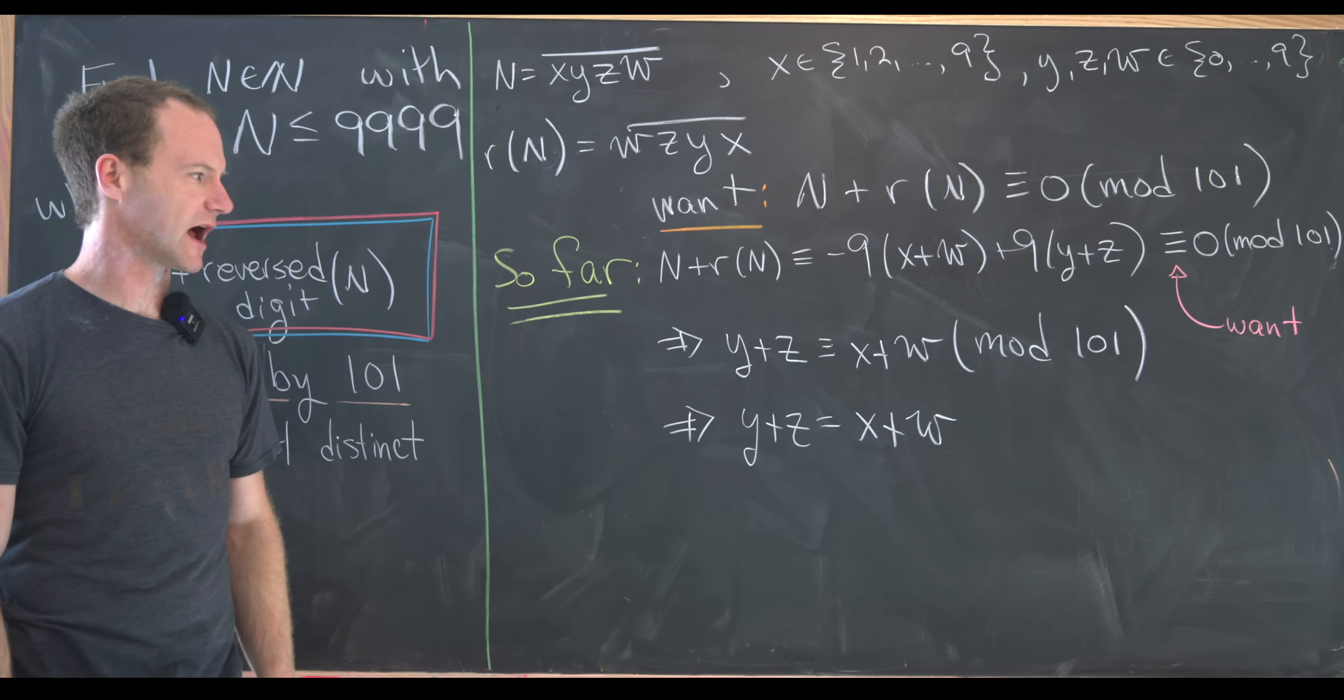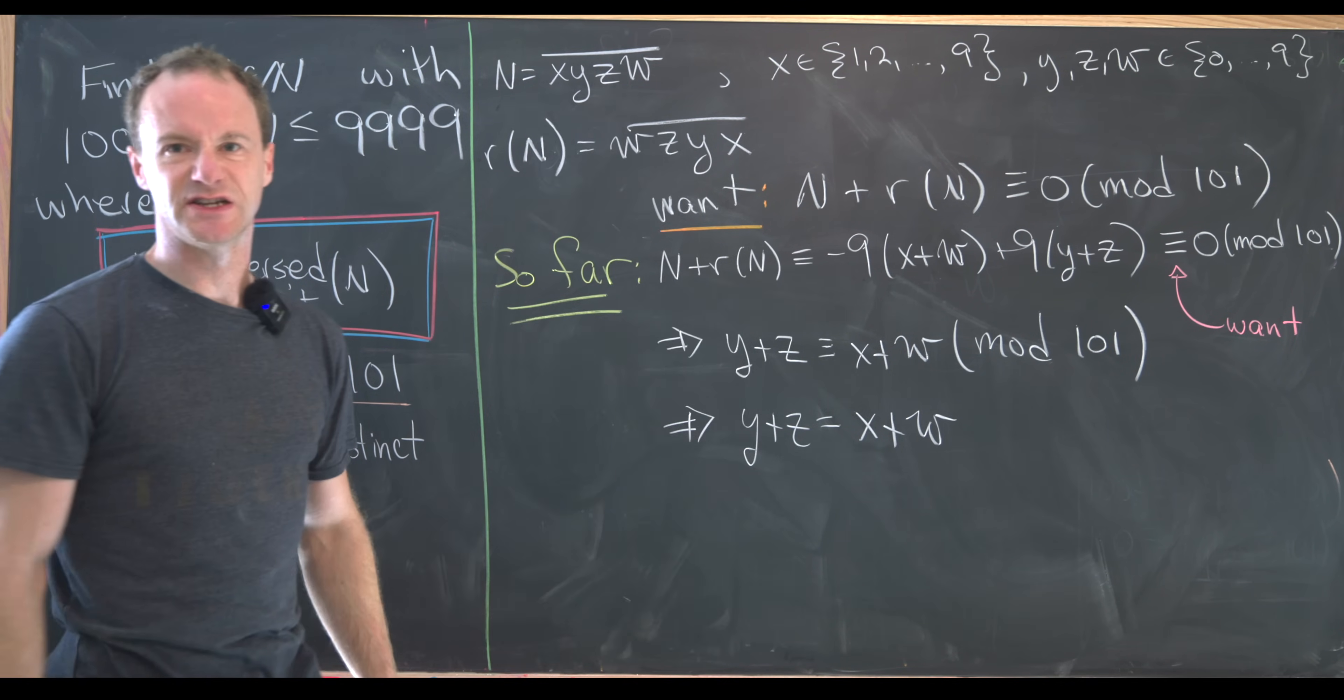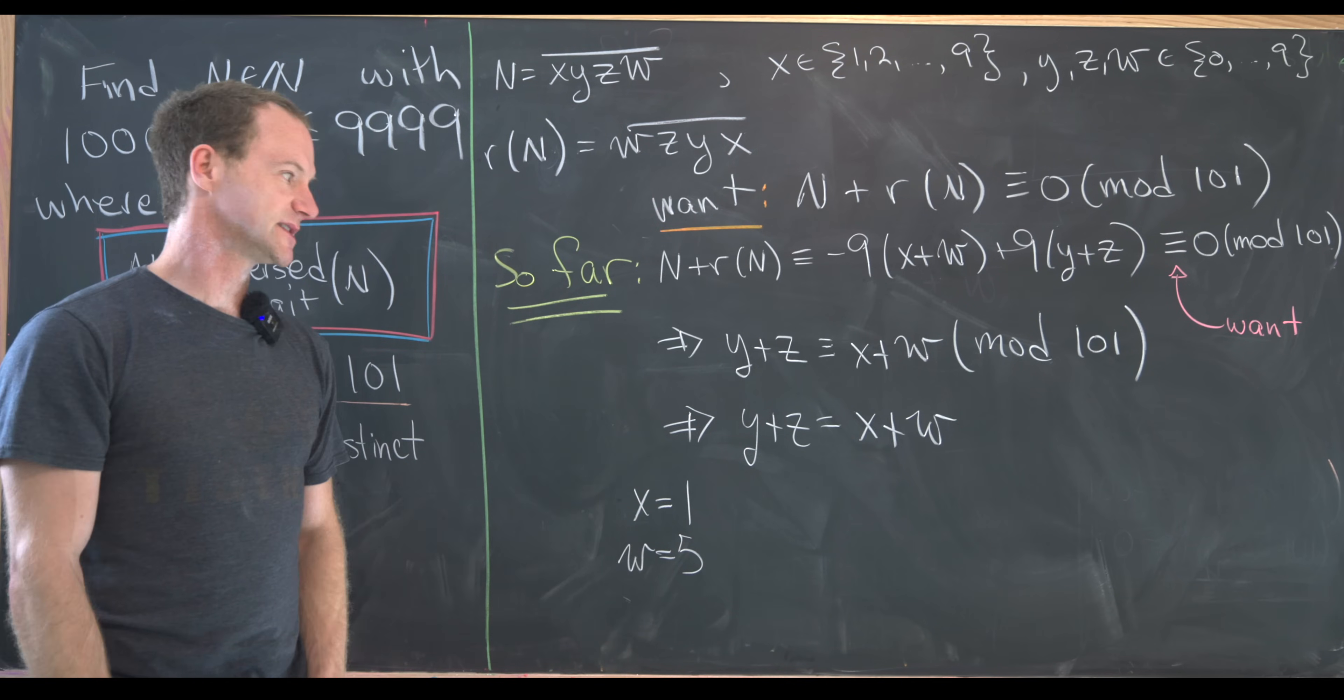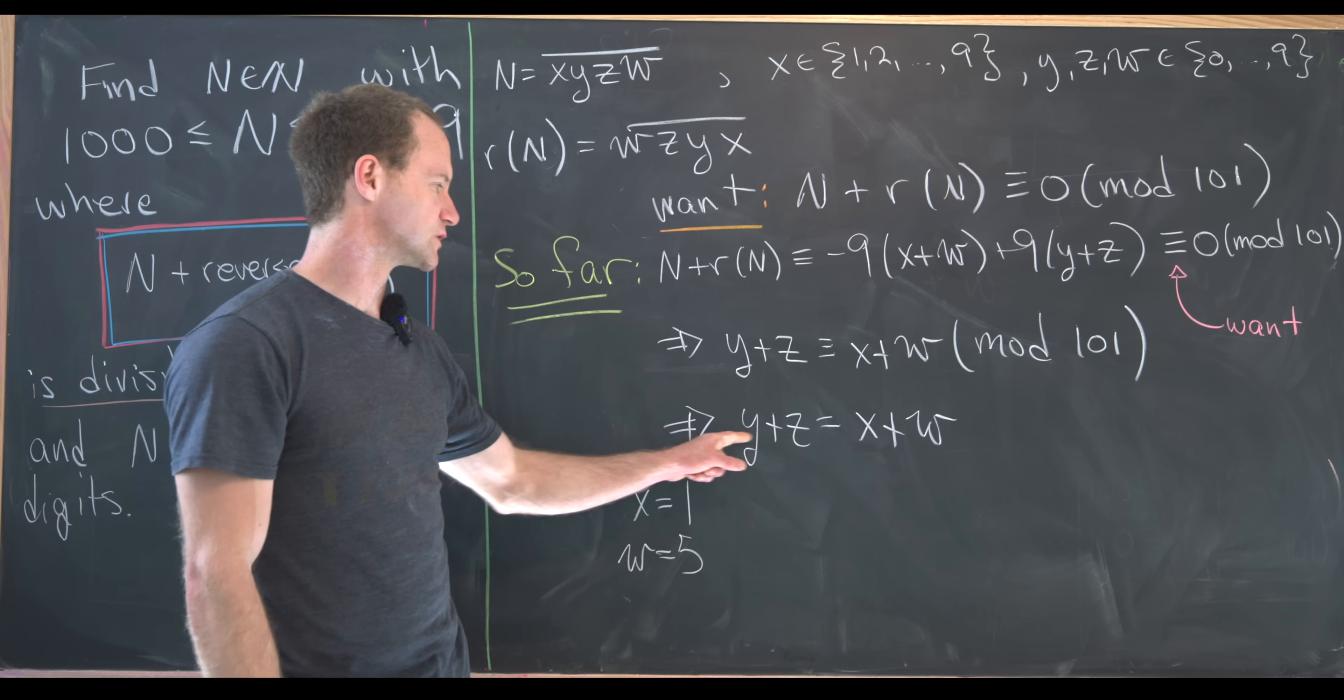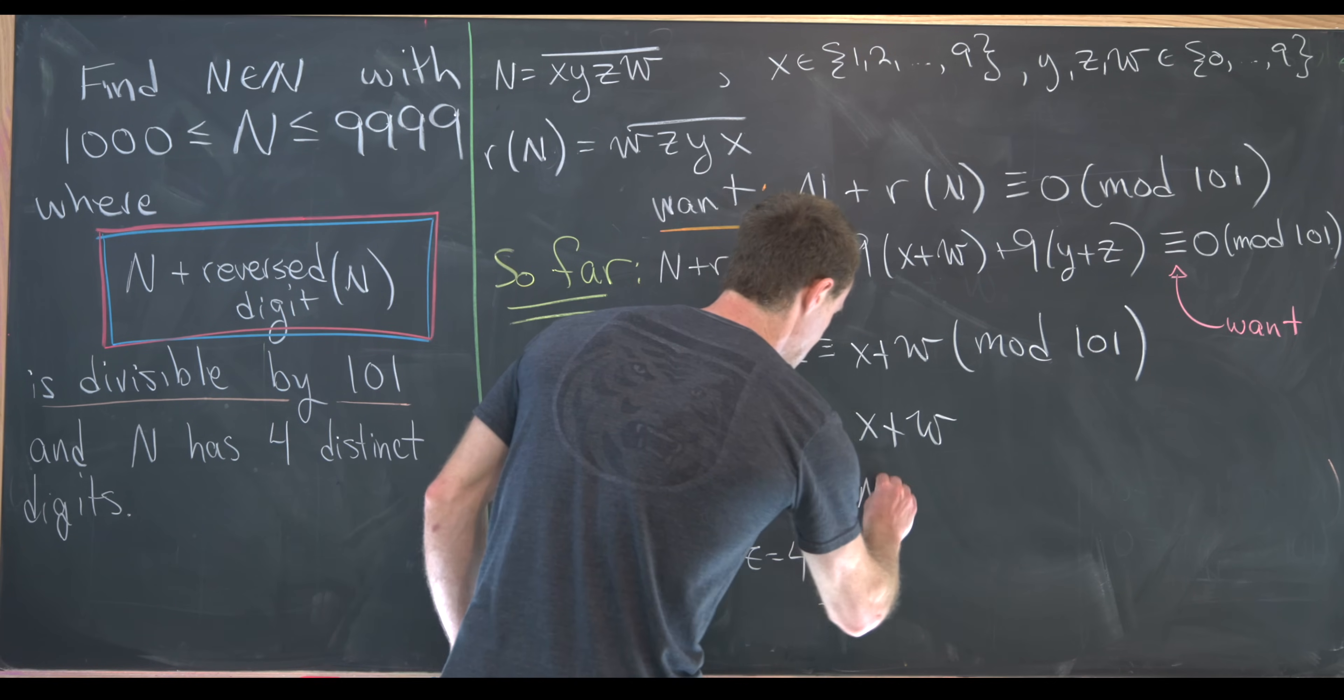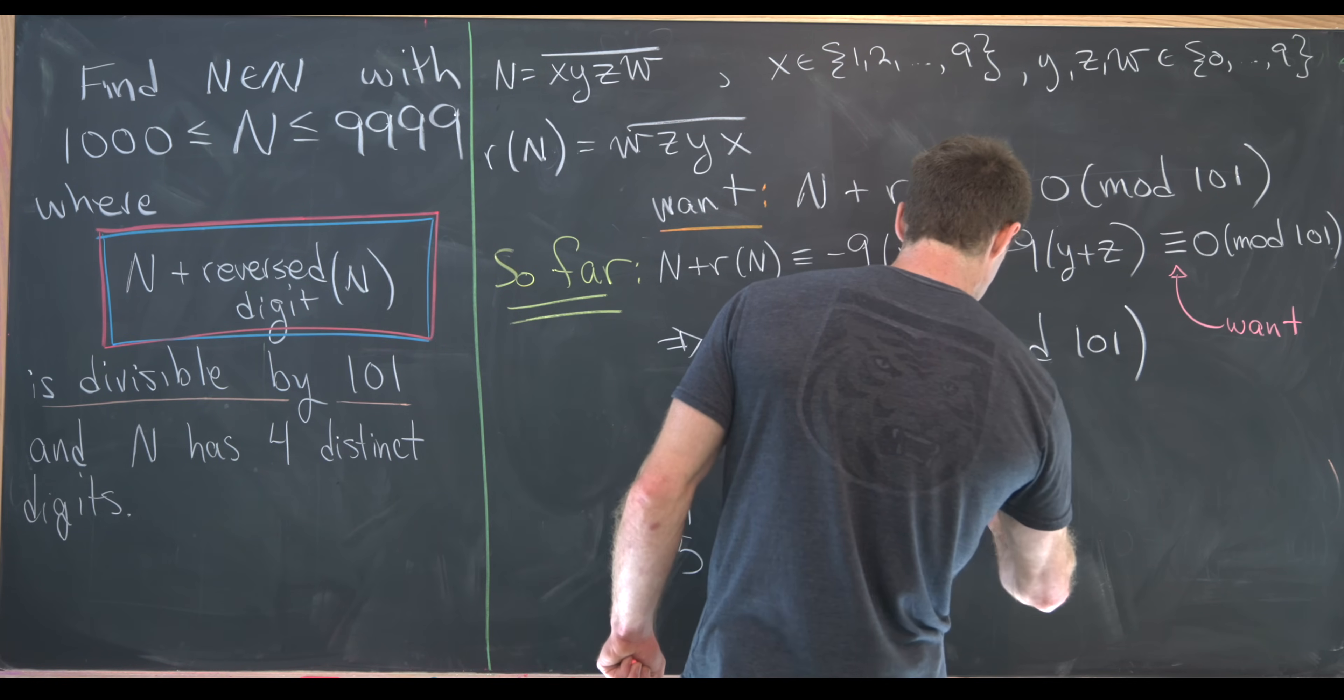But now we need to look at our other condition, which is that N must have four distinct digits. Now we can just play around with it. So let's say maybe that X is equal to 1 and we'll say W is equal to 5. So that means X plus W is equal to 6. So that means we need to find numbers Y and Z that are different that sum to 6. So we can take Y to be 2 and Z to be 4. Notice that means our number N is in fact equal to 1, 2, 4, 5.